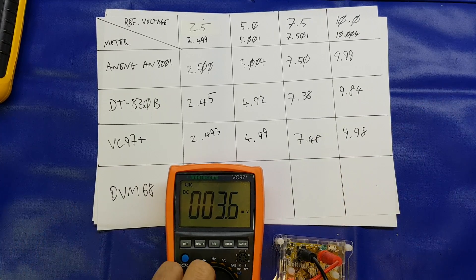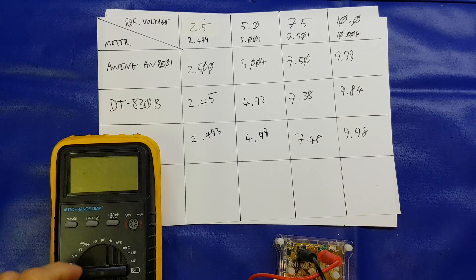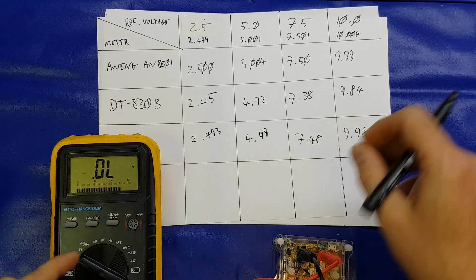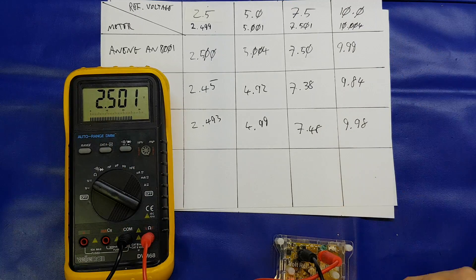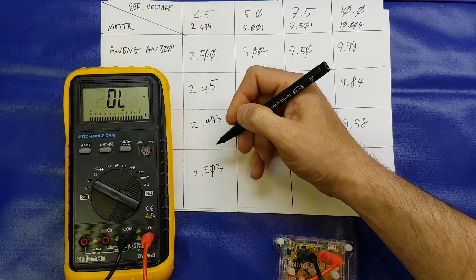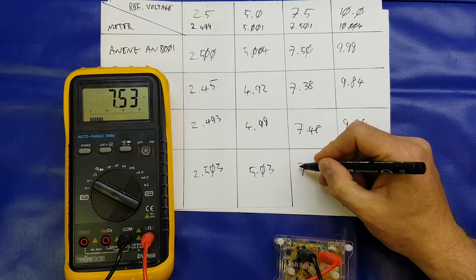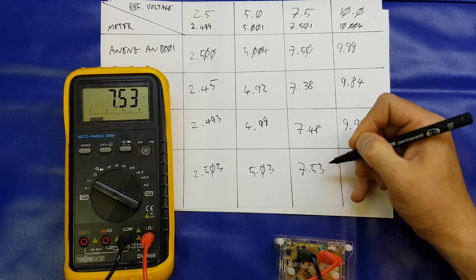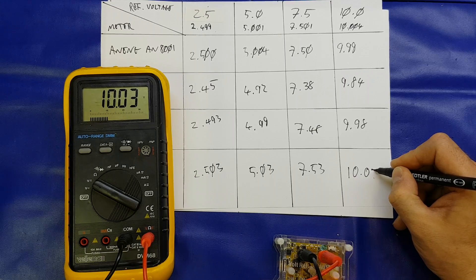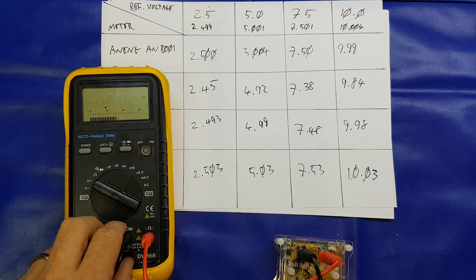And last but not least, the old Veliman or Maplin DVM-68. 2.503. 5.03. 7.53. And last but not least, 10.03. Right. Turn it off. Get it out of the way.